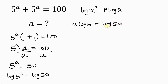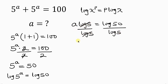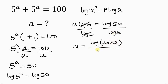Our next step is to divide both sides by log 5, since we're looking for a. Dividing both sides by log 5, log 5 cancels out from the left, leaving a equal to log 50 over log 5. Now log 50 is the same as log of 25 times 2, all over log 5.